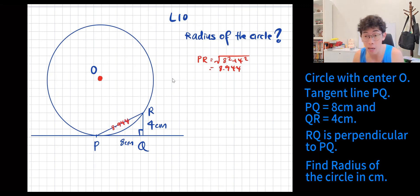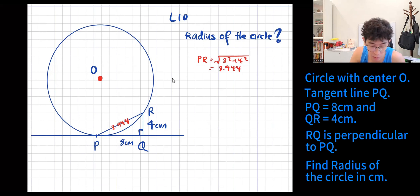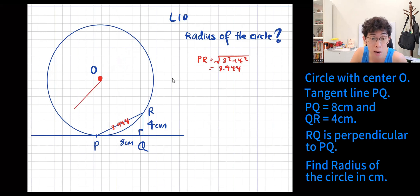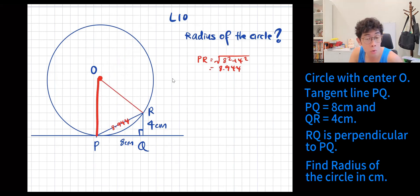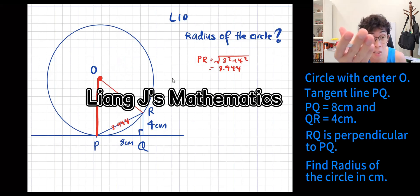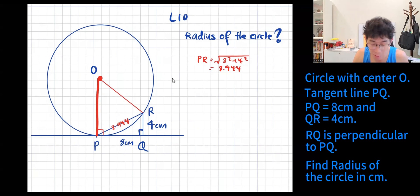Don't forget — your ultimate goal is to get the radius. To get the radius, you take the center and draw out. The first one I connect is to R, the second I connect is to P. I notice: this is a circle, that's the center point, that's the tangent point — 90 degree.